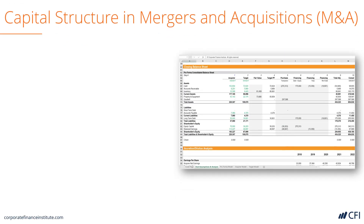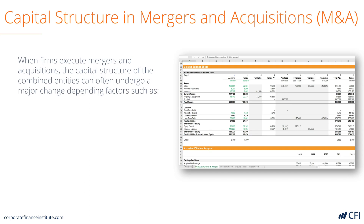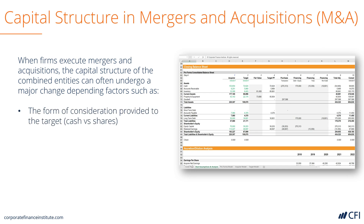Let's look at how capital structure fits in with mergers and acquisitions. When a company buys another business, it has a choice of how to fund that acquisition. It could fund it with cash or shares, or it could borrow money in the form of debt and use that to finance the acquisition. This is another point where companies have a choice about how they optimize their capital structure.